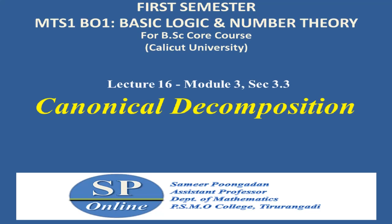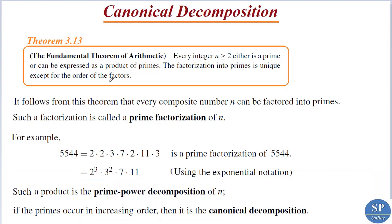Hello everyone. In this lecture we are going to discuss the topic canonical decomposition. In the previous lecture we discussed the fundamental theorem of arithmetic. The statement of the theorem was: any integer n greater than or equal to 2 either is a prime or it can be expressed as a product of primes. So from the above theorem it follows that every composite number n can be factored into primes, and such a factorization is called prime factorization of n.